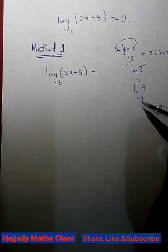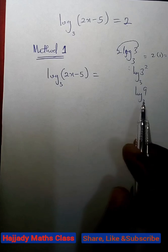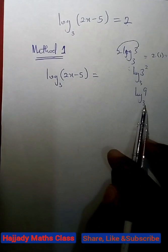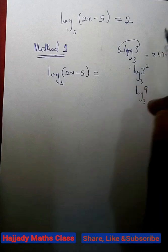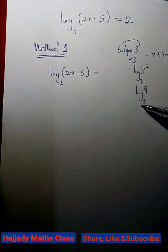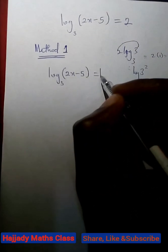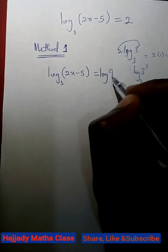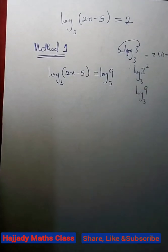From our last video, we've explained something similar to this. So, we have log base 3 of 9. So that means 2 is the same thing as log base 3 of 9. So, this is equal to log base 3 of 9.